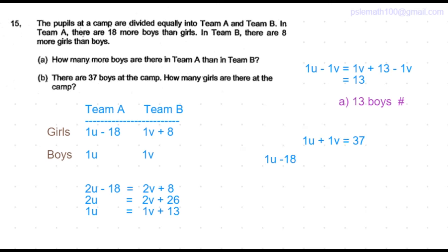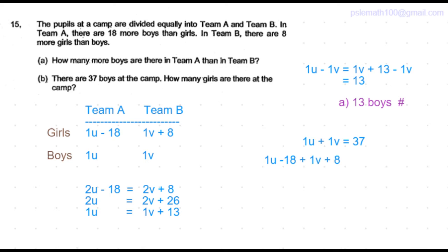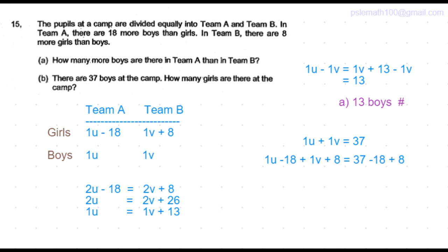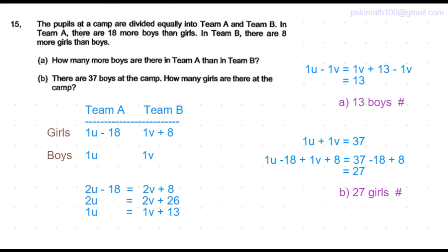The total number of girls in Team A is 1u minus 18, and the number of girls in Team B is 1v plus 8. The total is 1u plus 1v equal to 37 minus 18 plus 8, which is equal to 27. So there are a total of 27 girls in the camp.